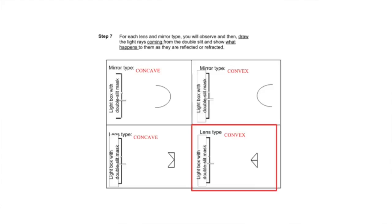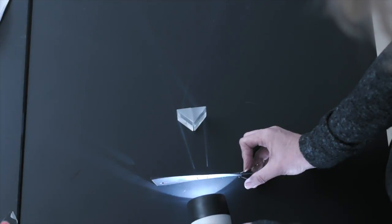And now the fourth diagram. Here are the light rays for the convex lens.